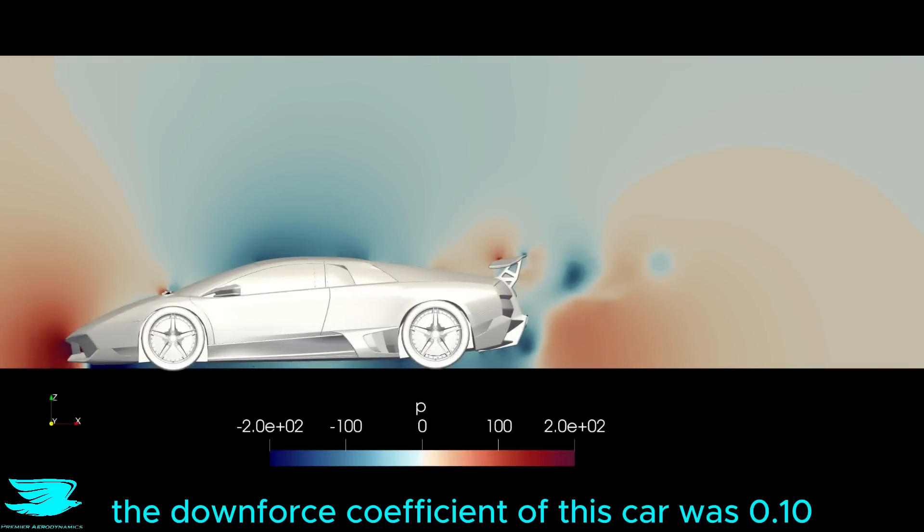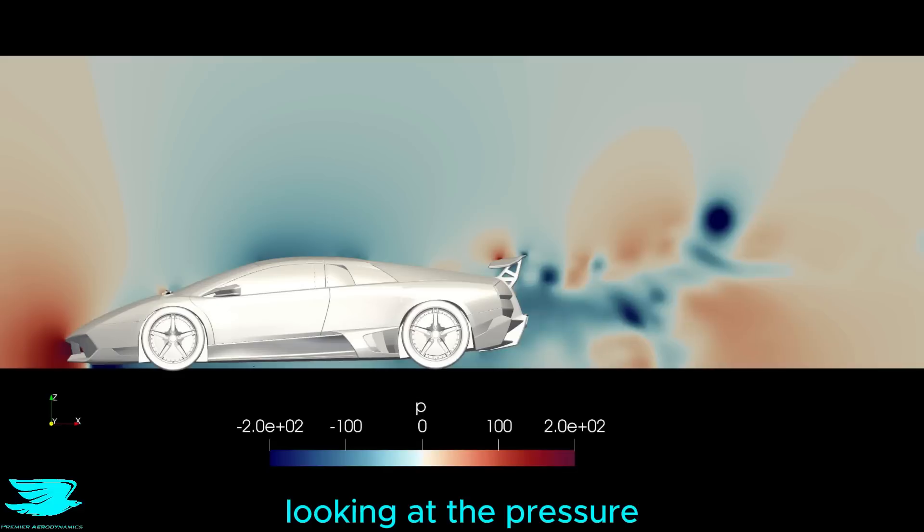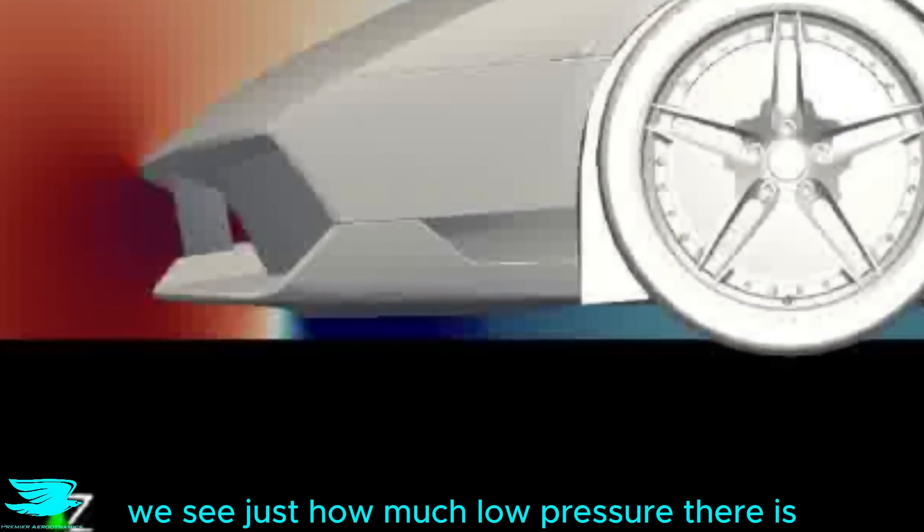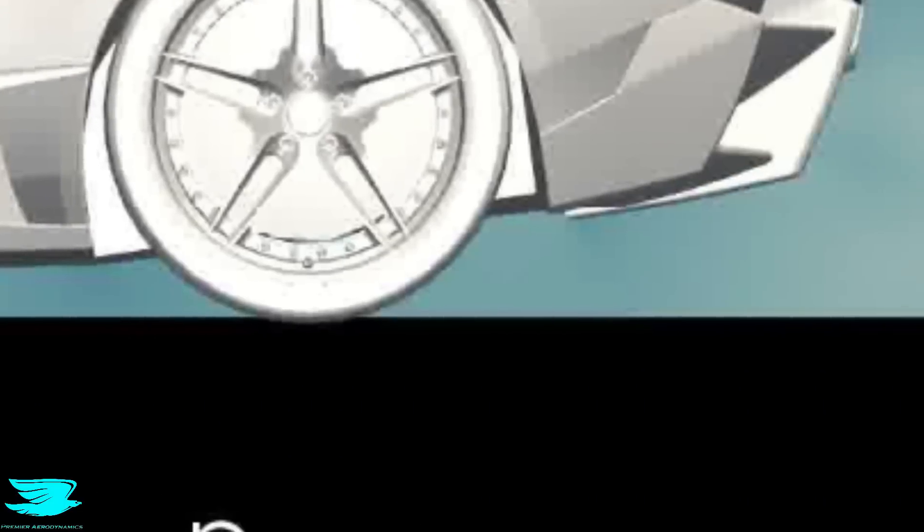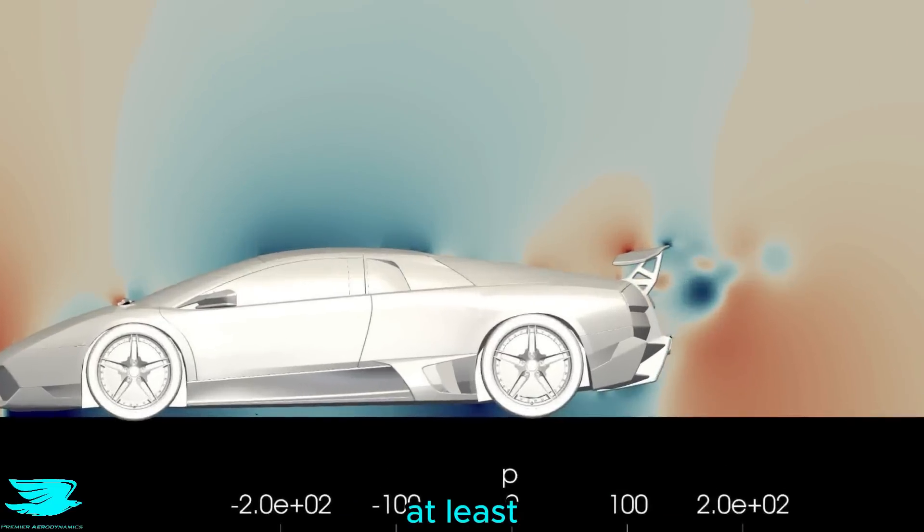The downforce coefficient of this car was 0.10, which was phenomenal at the time when 0.05 was great. Looking at the pressure, we see just how much low pressure there is under the front of the car. And given how low the pressure stays under the rest of the car, the original nosedive at the front seems worth it, from an aerodynamics point of view at least.